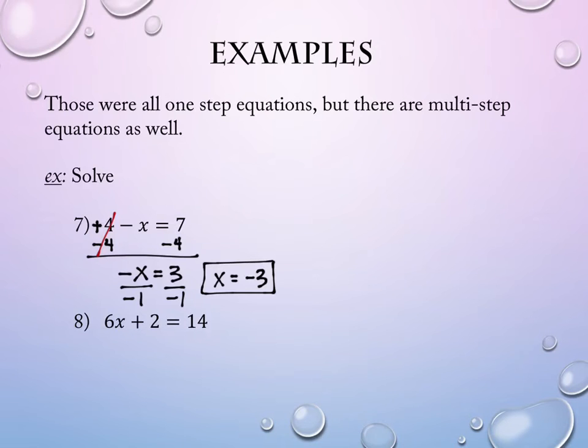The other way that you could do this problem is that you could add the x to the right-hand side. It would eliminate the addition and subtraction of the x here, leaving me with 4 equals 7 plus x. And then you could subtract 7.